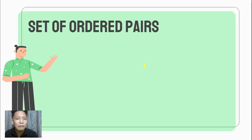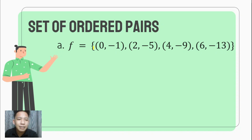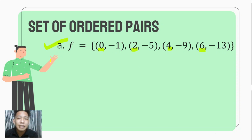Let's illustrate a function through a set of ordered pairs. For example, we have set F wherein the ordered pairs are (0, -1), (2, -5), (4, -9), and (6, -13). By our definition, a set of ordered pairs is a function if no two ordered pairs have the same first element. Looking at the X values or the domain — none of them repeat — so this set of ordered pairs represents a function.